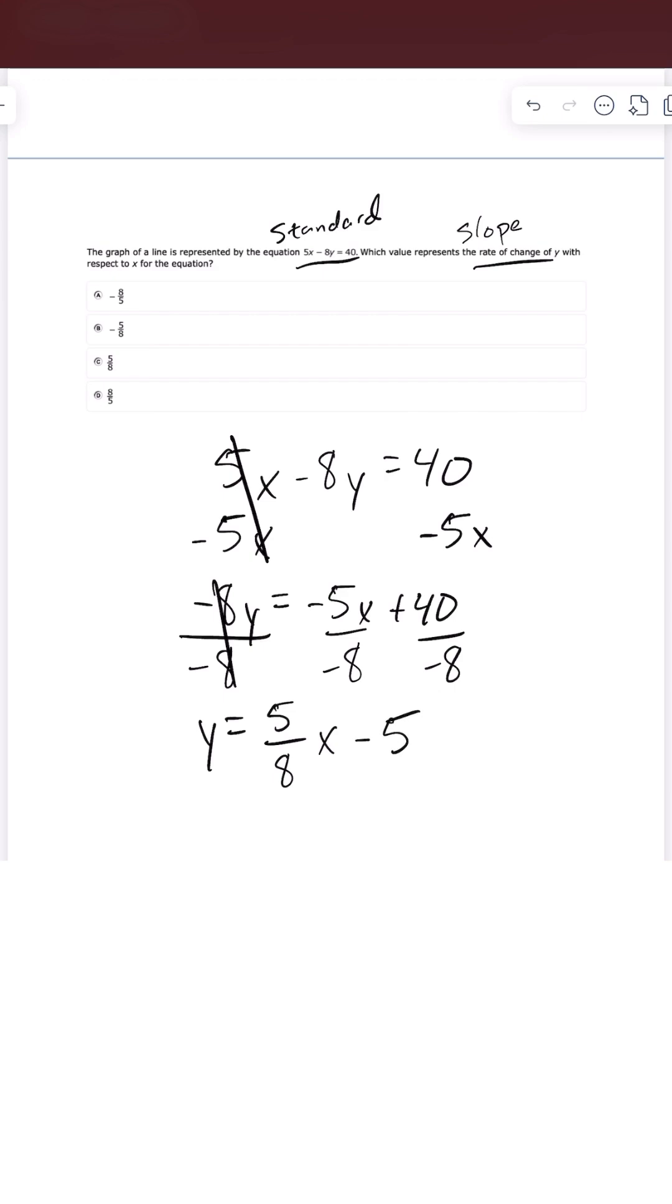So our slope or our rate of change is always going to be in front of x when we're in slope intercept. So our slope or our rate of change is positive 5 over 8. And that is letter C.